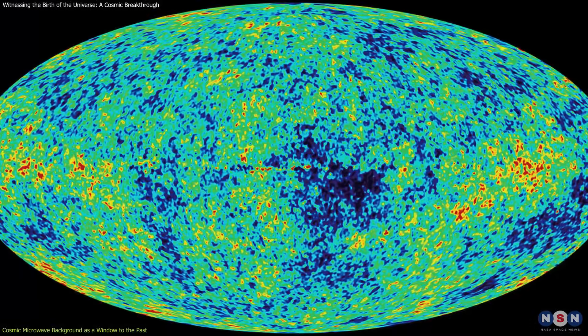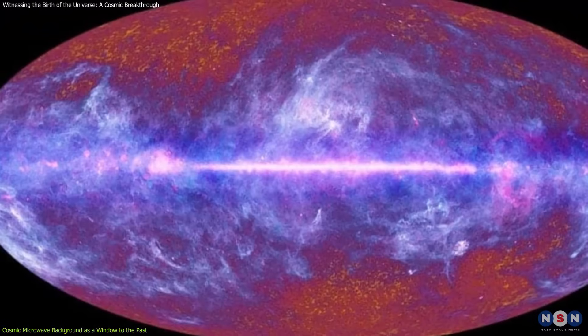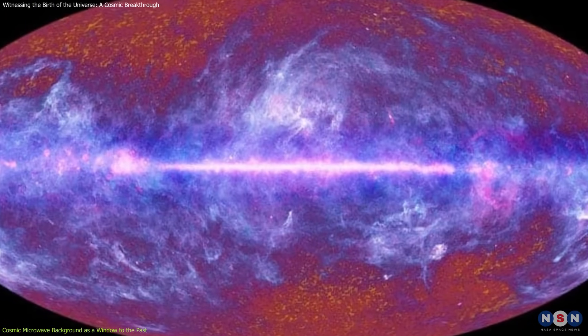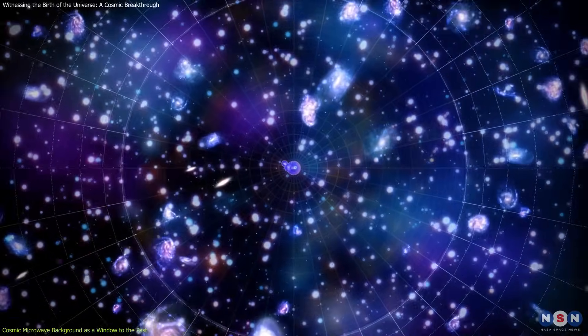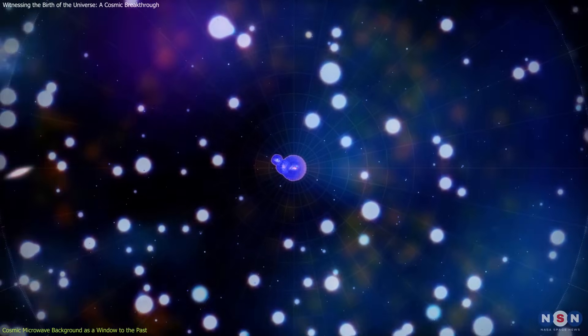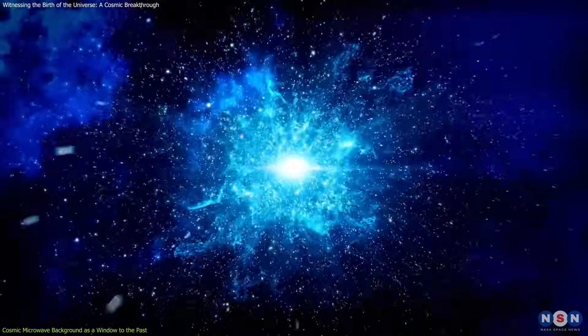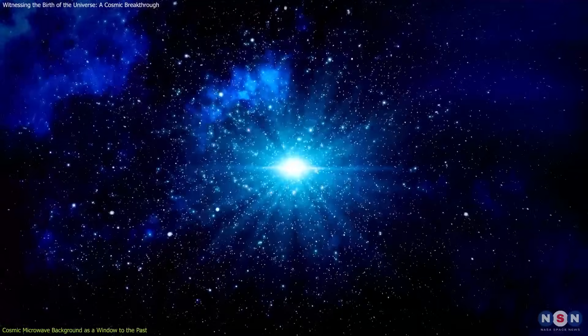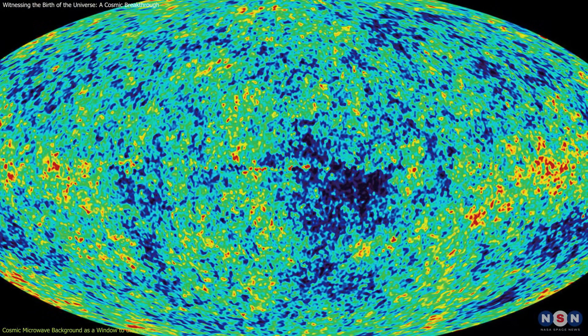The Cosmic Microwave Background Radiation, or CMB, is the remnant glow of the Big Bang, serving as a baby picture of the universe when it was just 380,000 years old. Before this period, the universe was too hot and dense for light to travel freely. As it expanded and cooled, neutral atoms formed, allowing light to escape and travel across the cosmos. This is the CMB that we observe today.